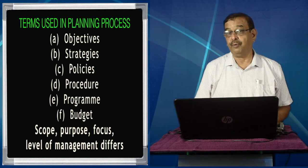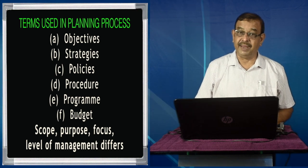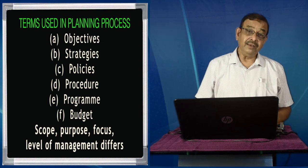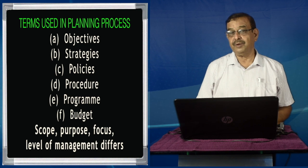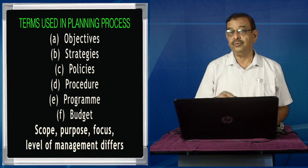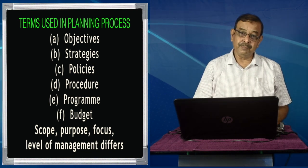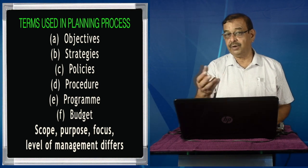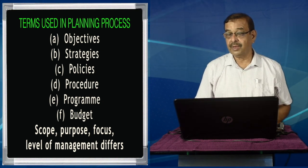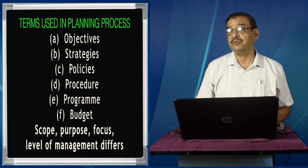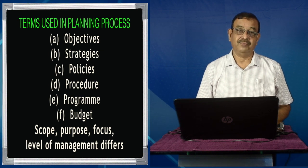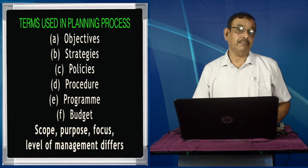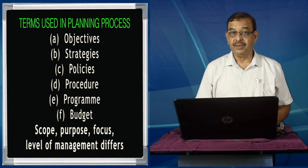Objectives — that is the starting point: vision, mission, goal. We use all these terms and we need to be clear about them. Strategies is the second term. Like in a game of chess, I shall plan a series of moves — first the queen, then the horse — and my opponent will also anticipate my moves. An organization adopts strategies based on what could be the competitor's actions. Strategy is a long-term plan; in short, we can say strategy means a game plan based on competitive actions.